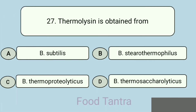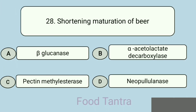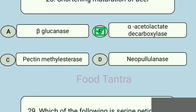Question 27: Thermolysin is obtained from — Option A: Bacillus subtilis. Option B: Bacillus stearothermophilus. Option C: Bacillus thermoproteolyticus. Option D: Bacillus thermosaccharolyticus. Question 28: Shortening maturation of beer — Option A: Beta glucanase. Option B: Alpha-acetolactate decarboxylase. Option C: Pectin methylesterase. Option D: Neopullulanase.